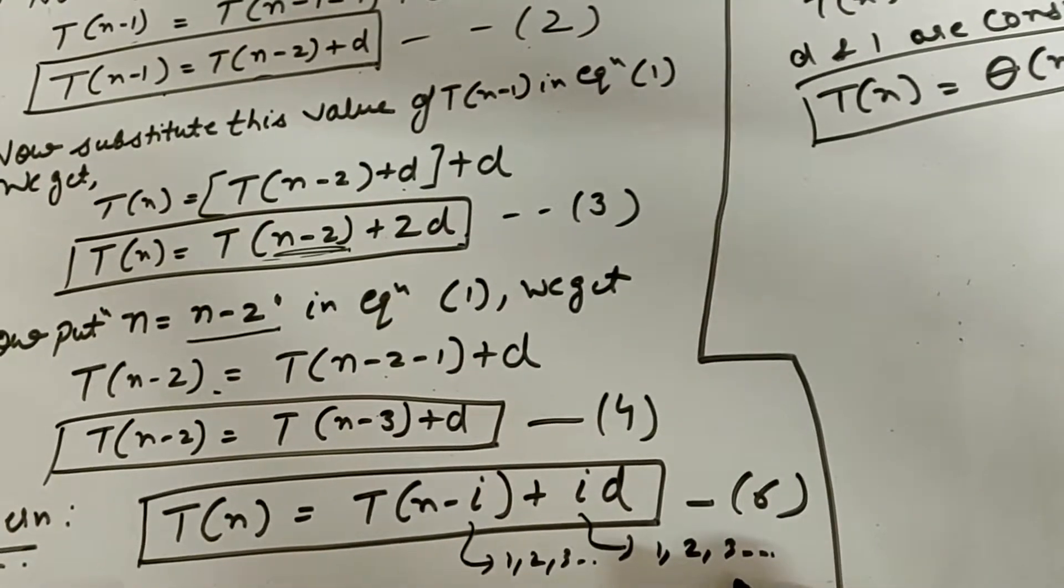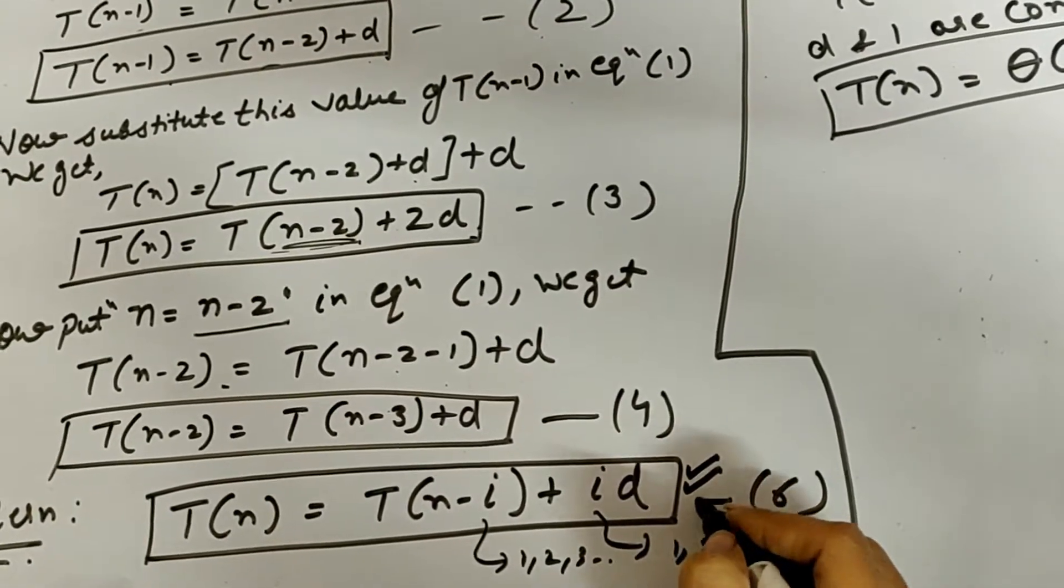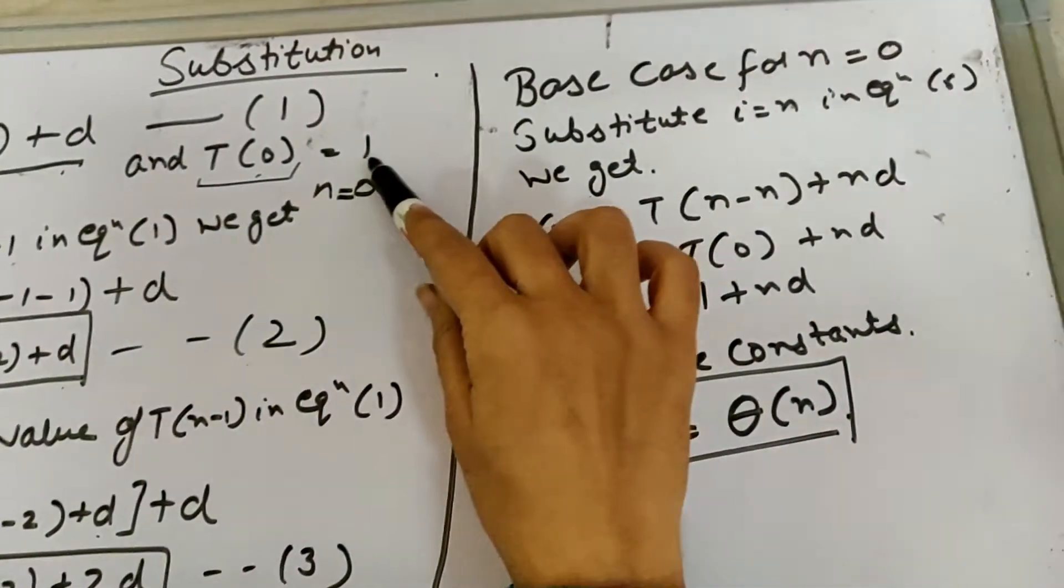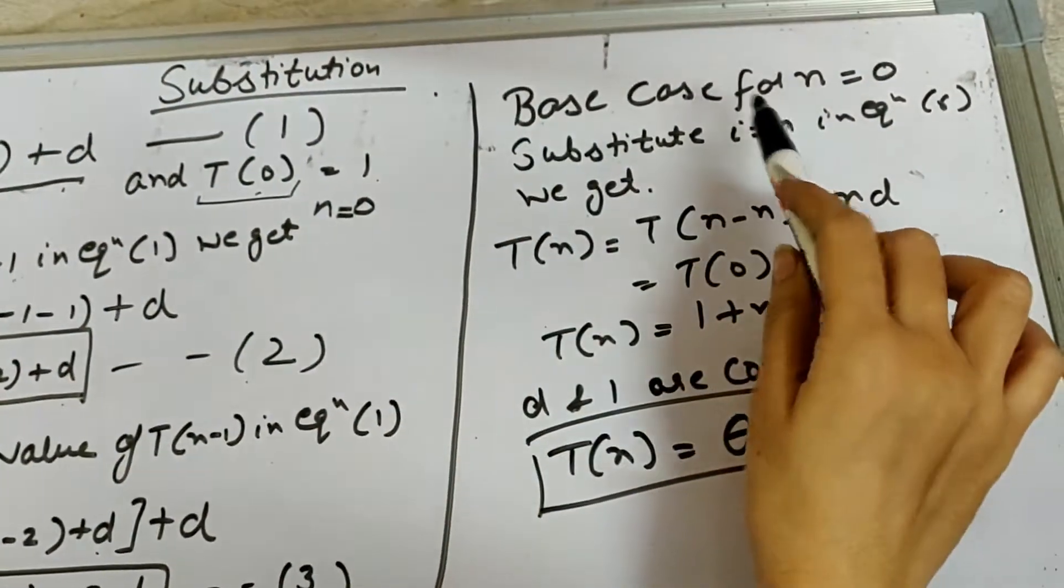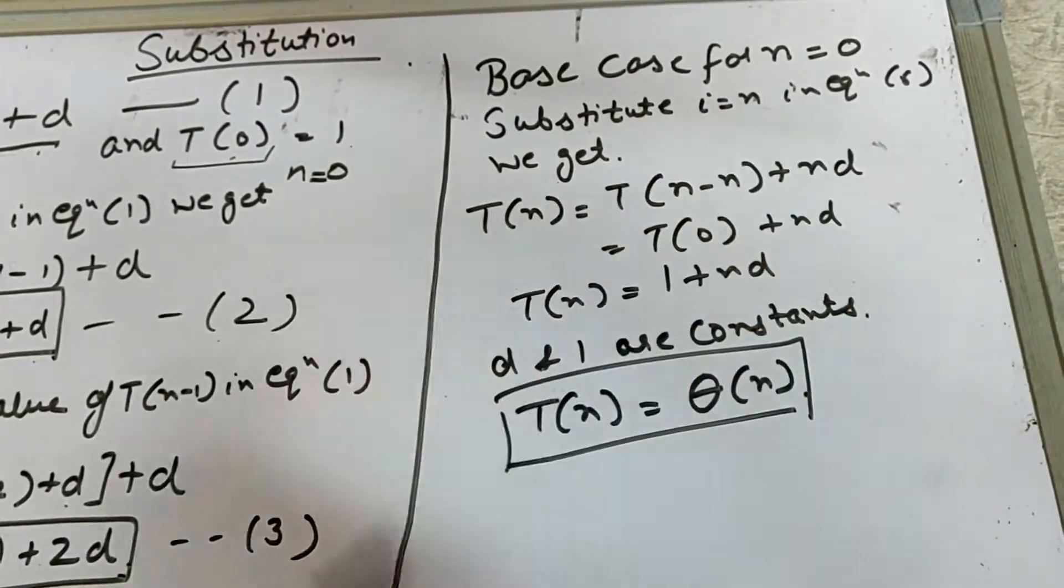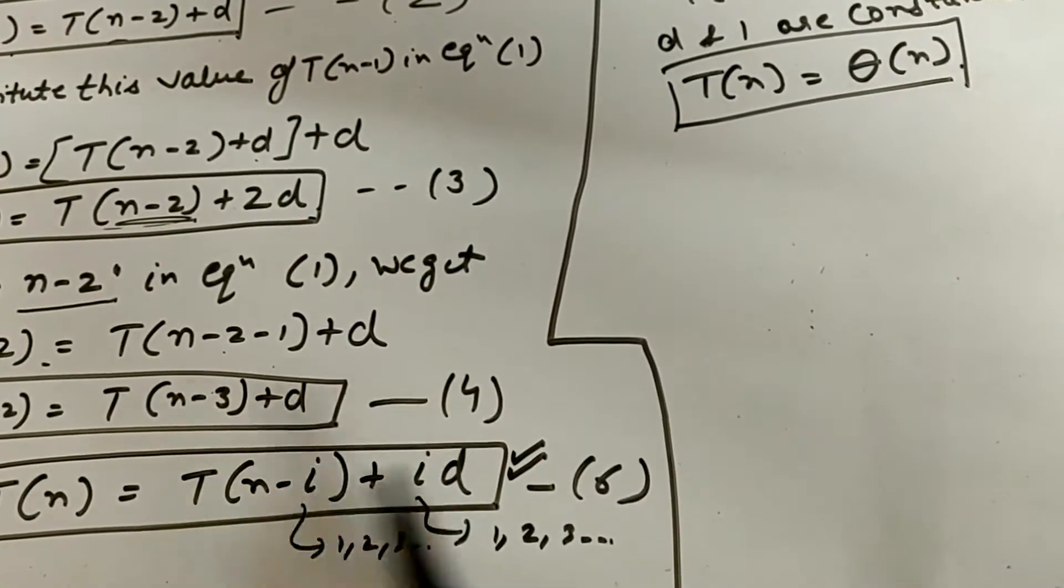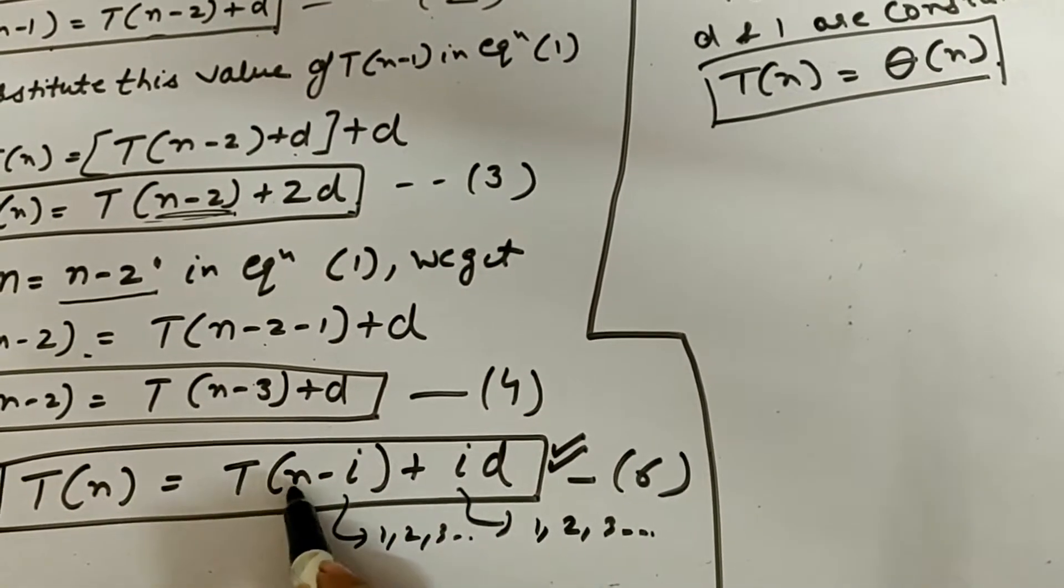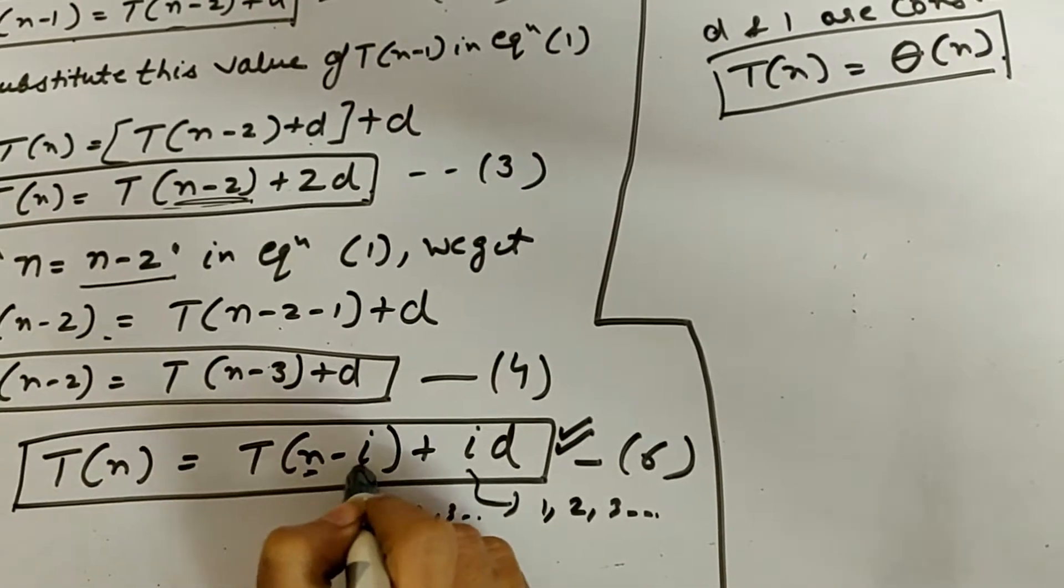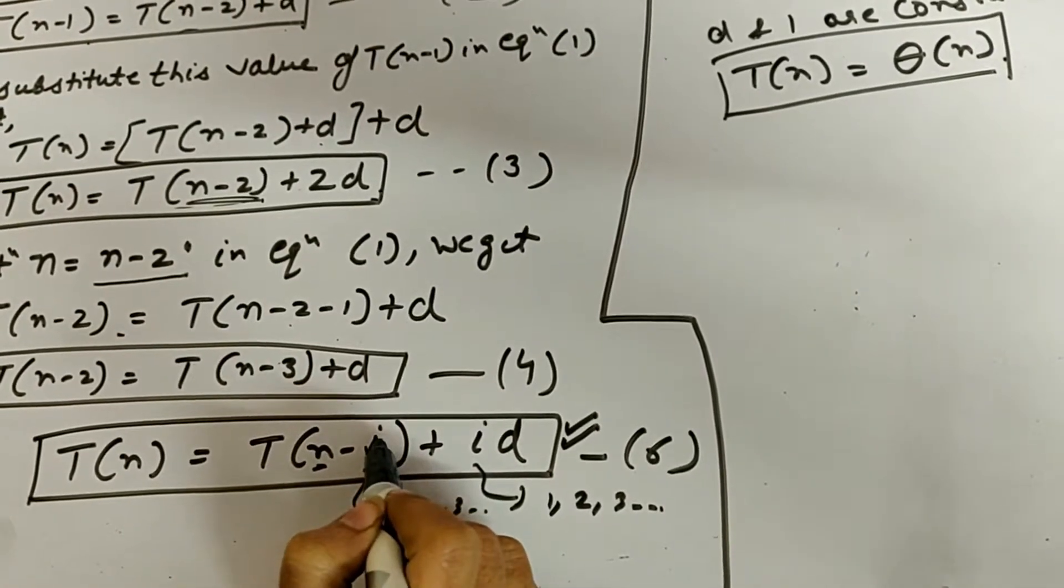So when we get the pattern, after the pattern we have to find out the base case. For this case, you have given that T(0) is equal to 1. So we have seen the base case for n equals 0. Substitute i equals n where we achieve the base case. So we take the form of T(0). So we do n minus i where i equals n.